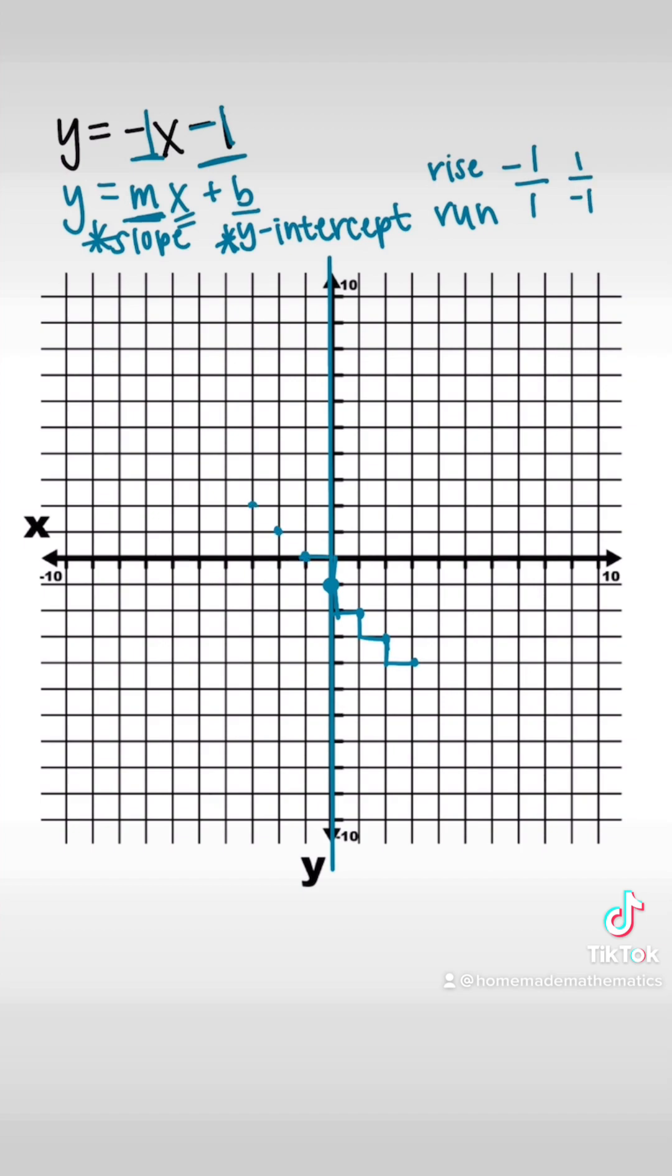So we're going to go down one to the right one, or you could also go up one to the left one, and that's going to create our points to where we can get a ruler, line that up to create our straight line, and there we have it.